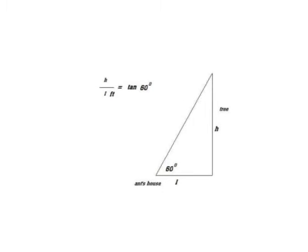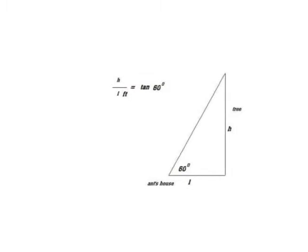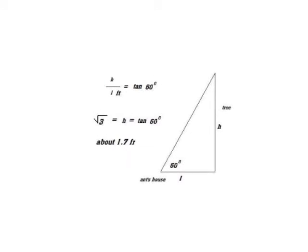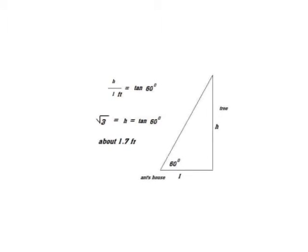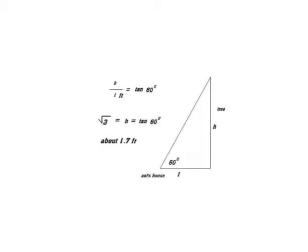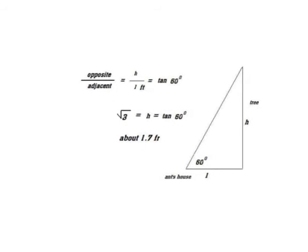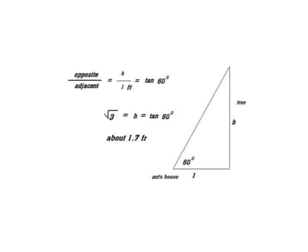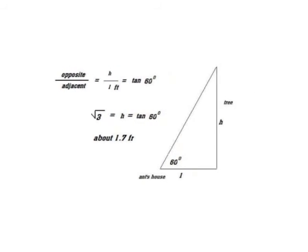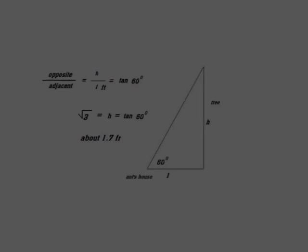If you make a ratio of h over one equal to the tangent of 60 degrees, you are one step away from solving the problem. Just calculate the tangent of 60 degrees and multiply the answer by one. You'll find that the height of the tree is exactly root three.